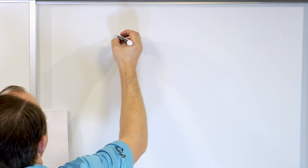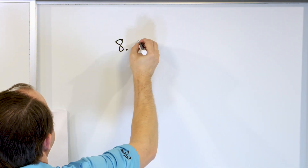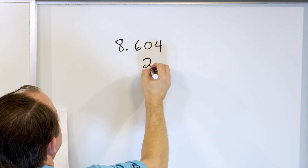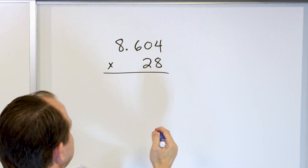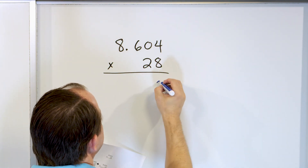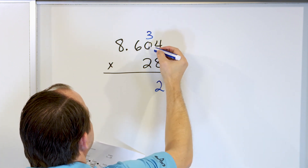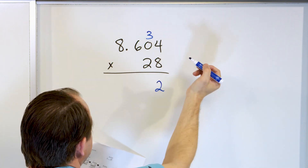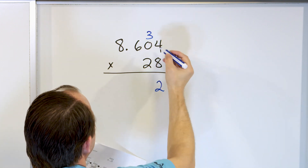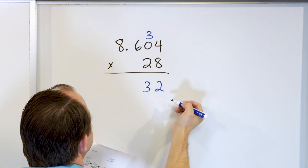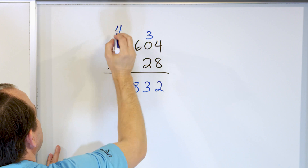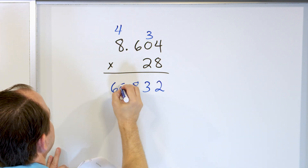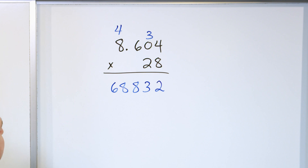Let's take a look at 8.604 multiplied by the whole number 28. We pretend there is no decimal at all and multiply. 8 times 4 is 32, carry the 3. 8 times 0 is 0, plus 3 means we have a 3 here. 8 times 6 is 48, carry the 4. 8 times 8 is 64, plus 4 is 68. So we have 6, 8, 8, 3, 2 in that first line.